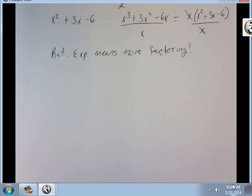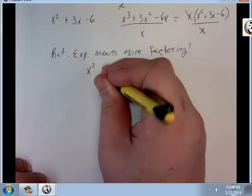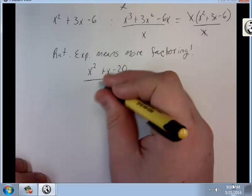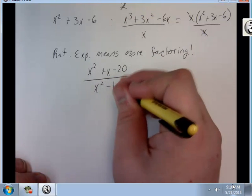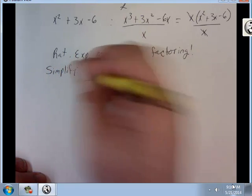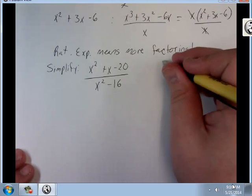Let's say we had x squared plus x minus 20 over x squared minus 16 and you were told to simplify. What do you do?